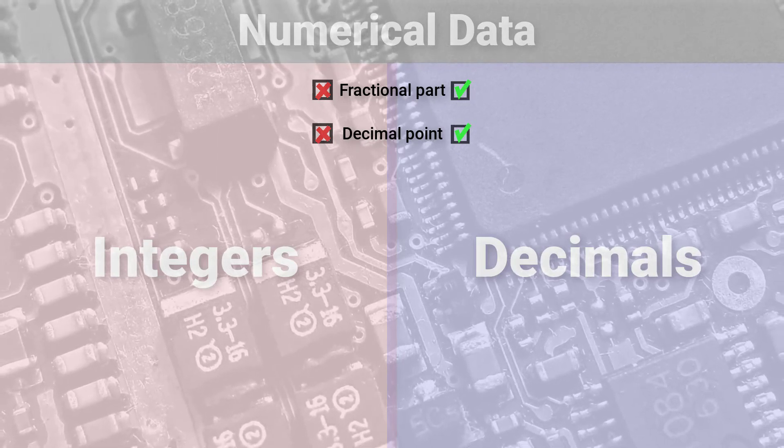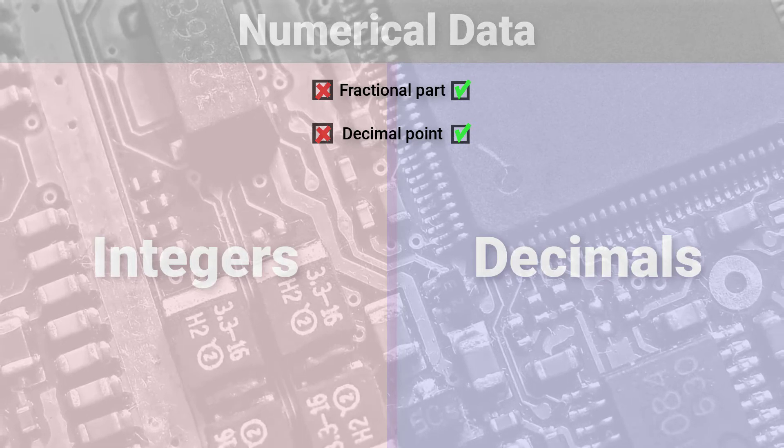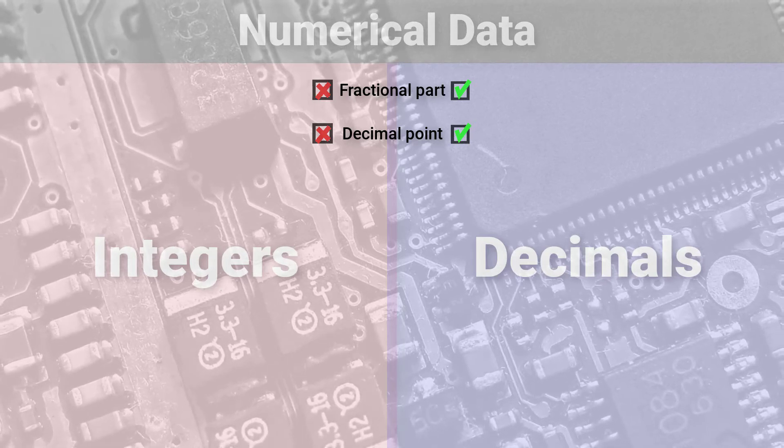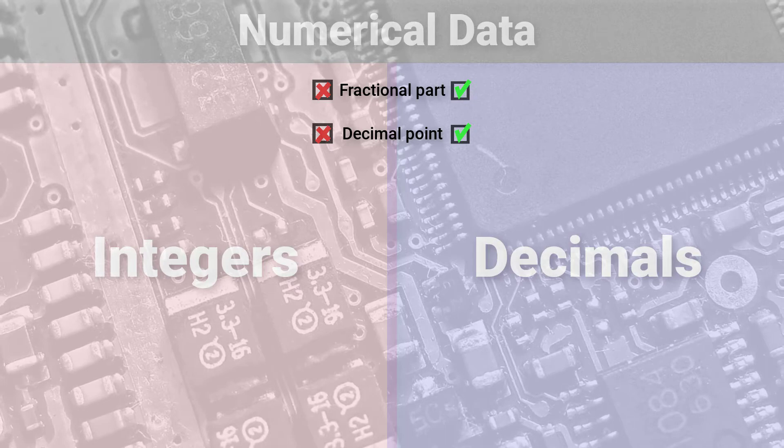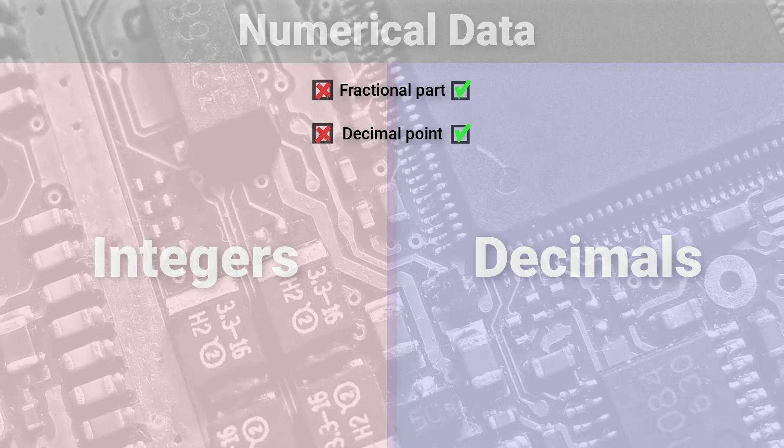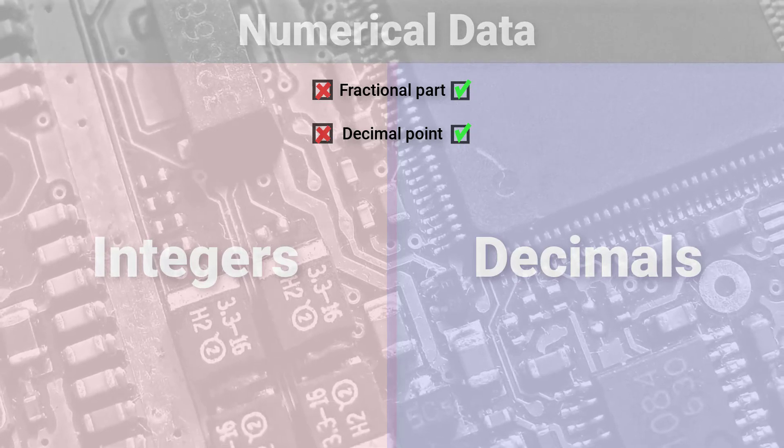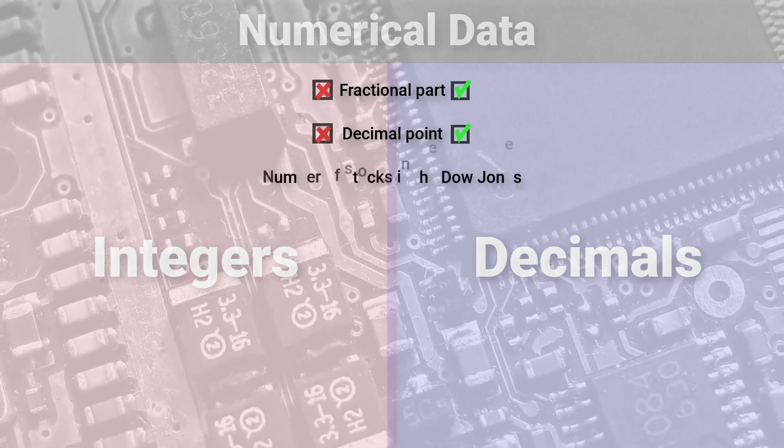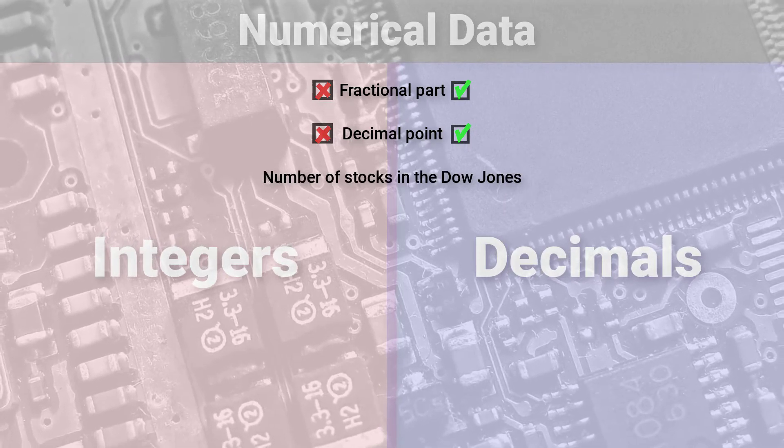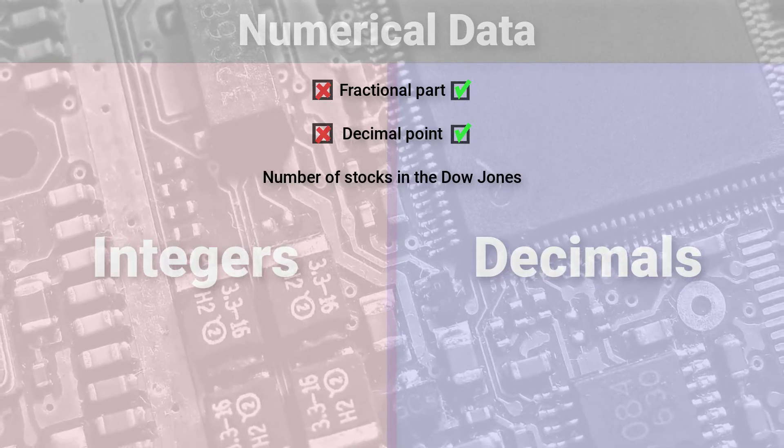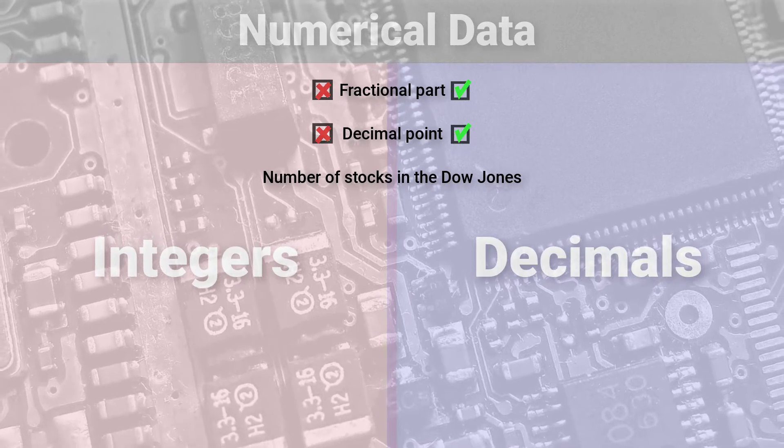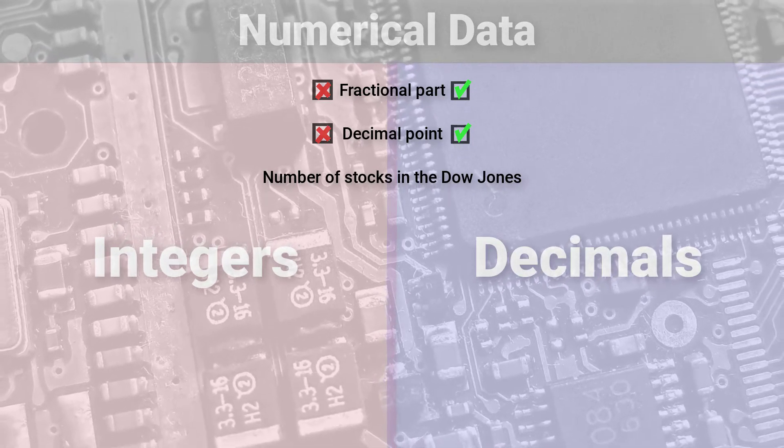The reason we call the point a decimal point is because deci means a tenth. And each digit in the everyday numbers that we are used to dealing with represents a power of 10. Okay, so suppose we're inside a computer program and we want to refer to an integer, like say, the number of stocks in the Dow Jones Industrial Average. We just literally type out the number in this case. And for the Dow Jones, this number would be 30.